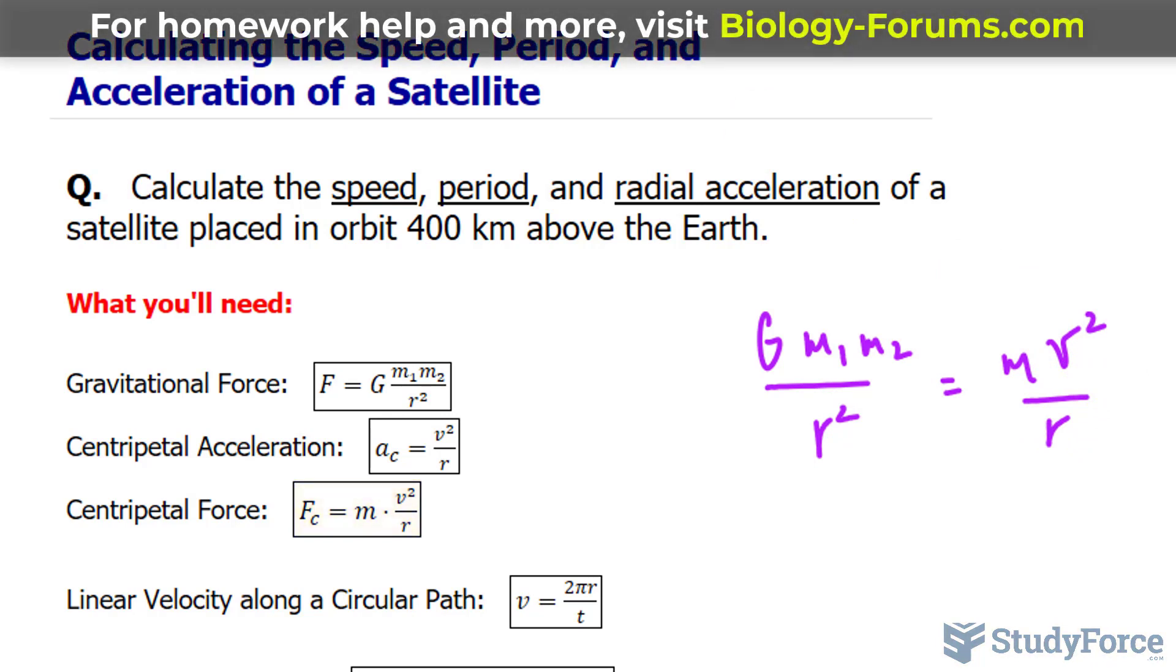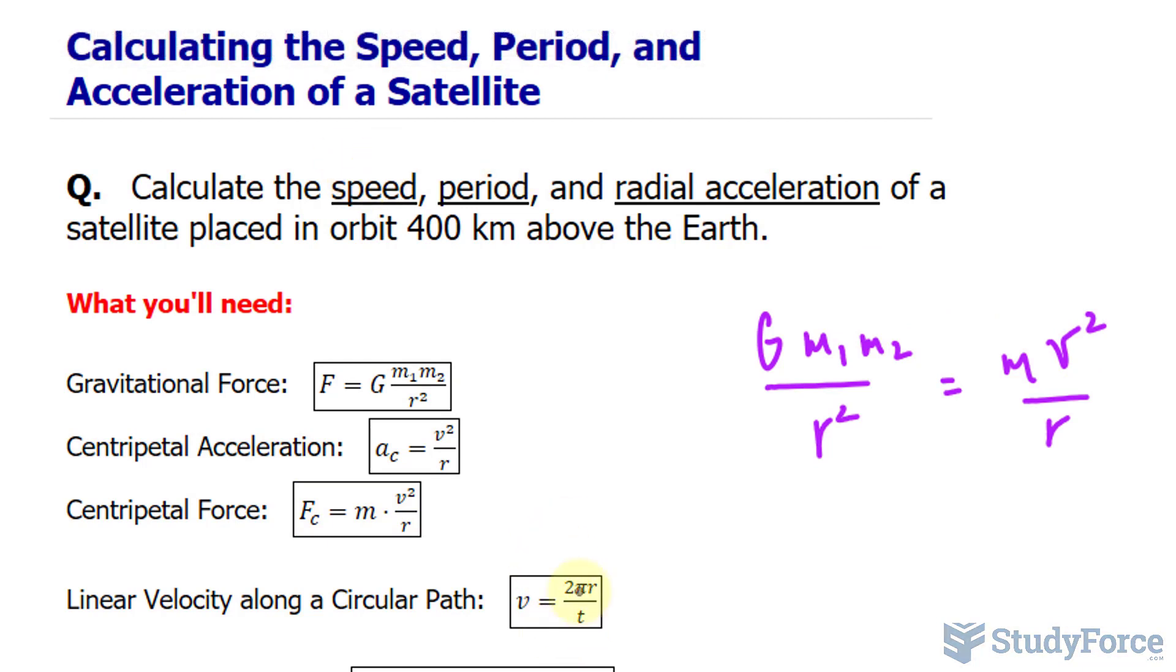If you analyze this equation further, you can actually solve for v, which will represent the speed. Once you've solved for v, you can use this formula, which replaces v with 2πr over t, and that represents the linear velocity along a circular path. The radial acceleration can also be found by substituting your velocity into the centripetal acceleration formula shown here.